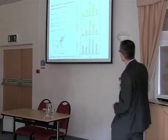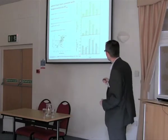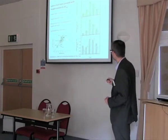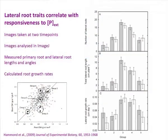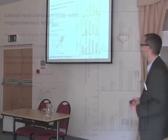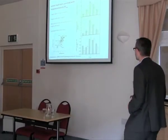We grouped our varieties into different groups depending on whether they were phosphorus use efficient or not — groups three and four were the most phosphorus use efficient. We measured different aspects of lateral roots: the number of lateral roots, lateral root length, and lateral root growth rate. There was a strong correlation between these traits and having higher phosphorus use efficiency in the plants.